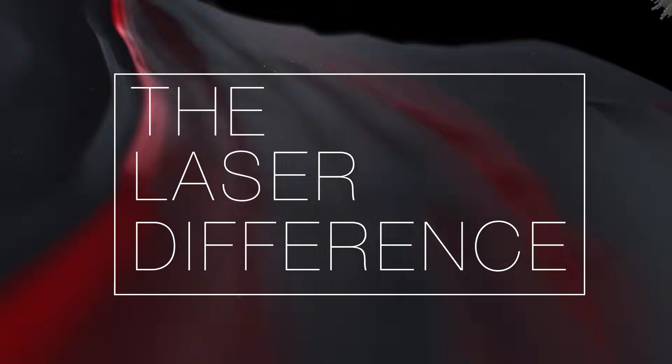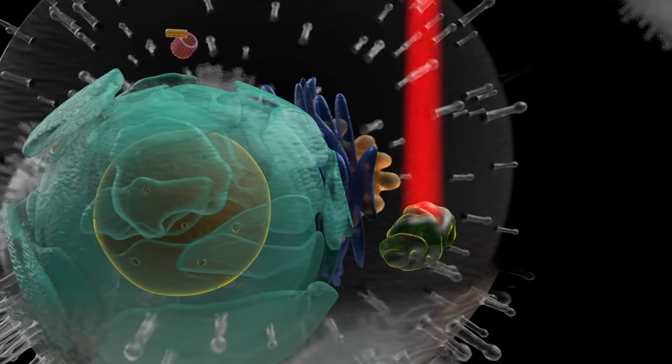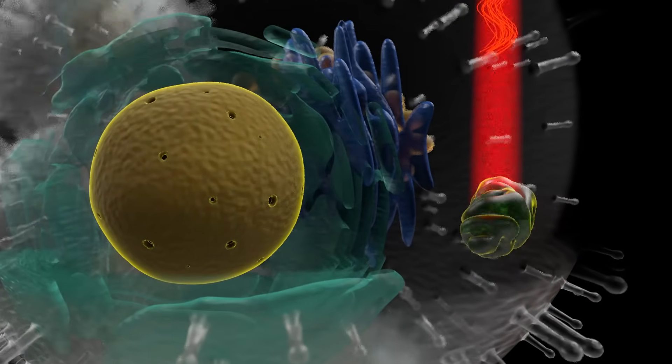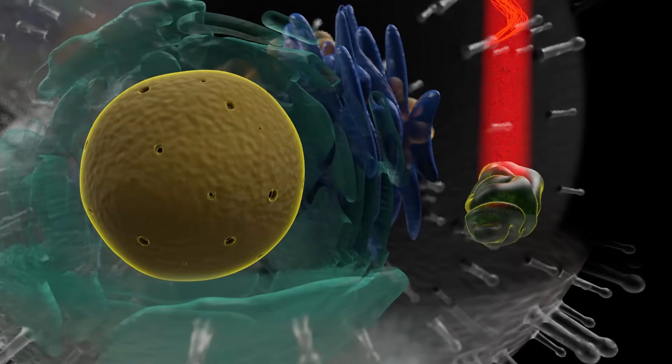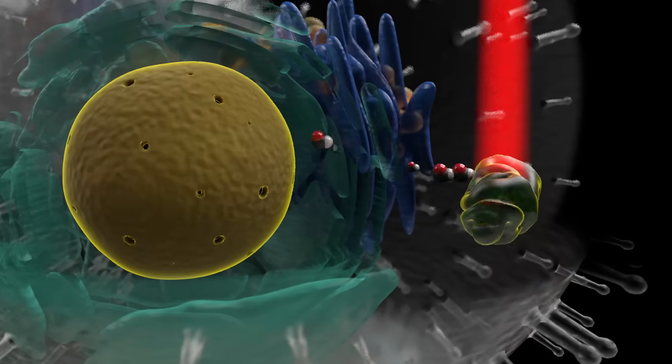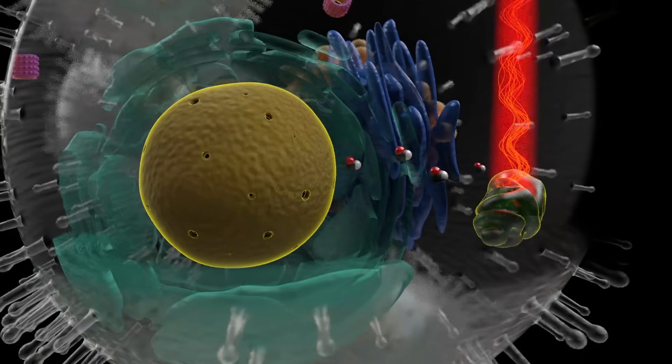Erchonia lasers can be used to target and stimulate the mitochondria of a cell to increase the energy production within the cell so it can perform essential functions needed to stabilize. The increase in mitochondria energy provided by the Erchonia laser will produce signaling molecules shown to activate various beneficial biological changes.